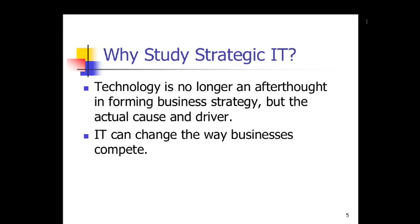eBay is an e-business. PayPal, owned by eBay — e-business. Macy's is a real traditional business, but they sell stuff online, so they participate in e-commerce. I think I've beaten that one down enough. But sometimes on a midterm I'll ask for an example of an e-business and an example of a real business, and students don't know the difference — which is actually a typical question I like to throw out to see if anyone's been listening.